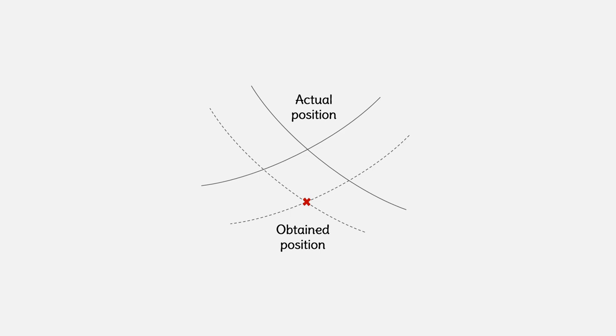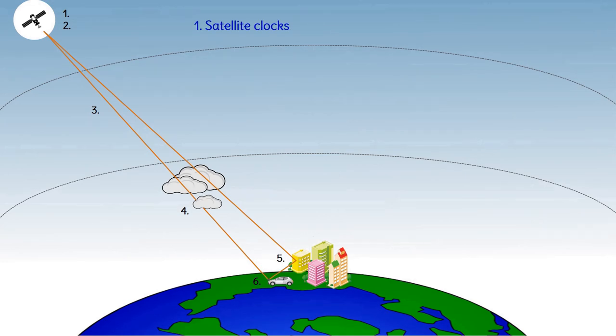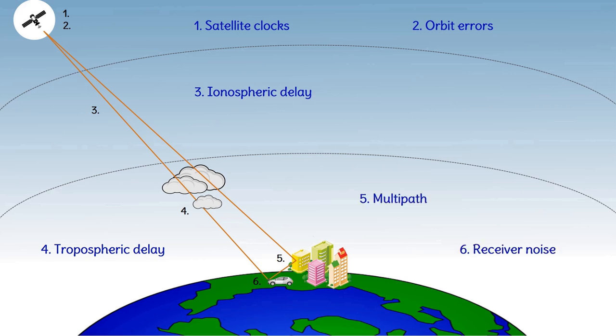To obtain the exact position or at least a highly accurate position, it is required to reduce the error sources. For the GPS chips in your cell phone the positioning accuracy is several meters. However, in research we achieve an accuracy of multiple millimeters. The measurement errors include satellite clock inaccuracies, orbit errors, ionospheric delay, tropospheric delay, multipath and receiver noise.